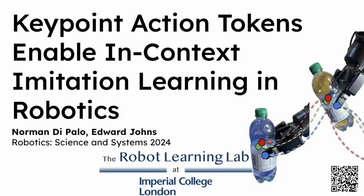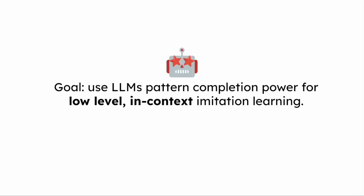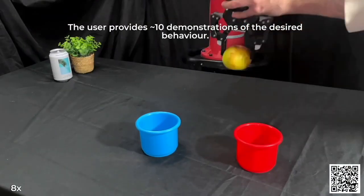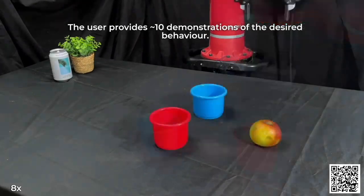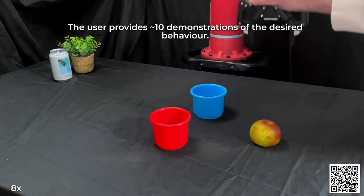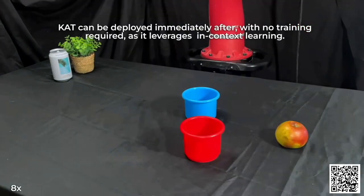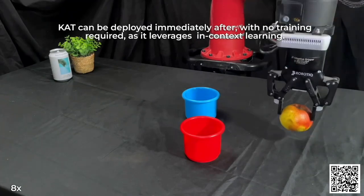In this video I'm going to present Keypoint Action Tokens, enabling in-context imitation learning in robotics, presented at the Robotics Science and Systems Conference 2024. The goal of this work is to show that we can use LLMs' pattern completion power for low-level in-context imitation learning. By using in-context learning, a user can provide a few demonstrations of a task and the robot can be deployed immediately.